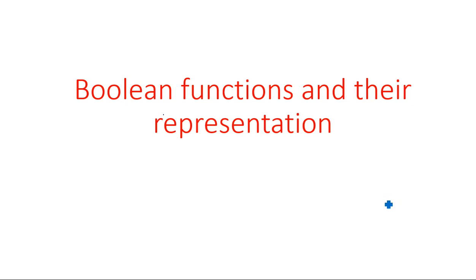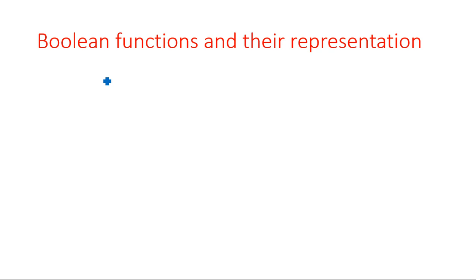In this video, I am going to explain about the representation of Boolean functions. A Boolean function — for example, F equals AB plus BC — is an expression derived from a truth table, generally using Karnaugh maps or other simplification methods. After obtaining the expression, there are two types of representations: one is standard SOP form and another is standard POS form.